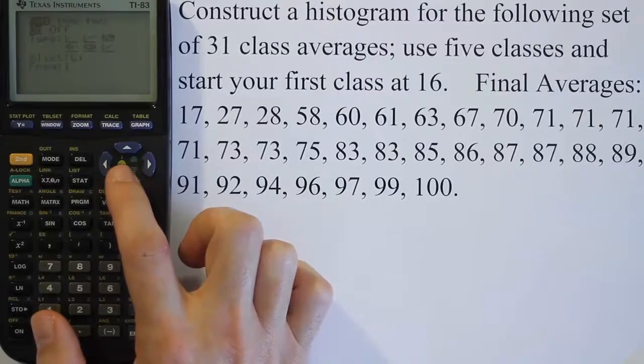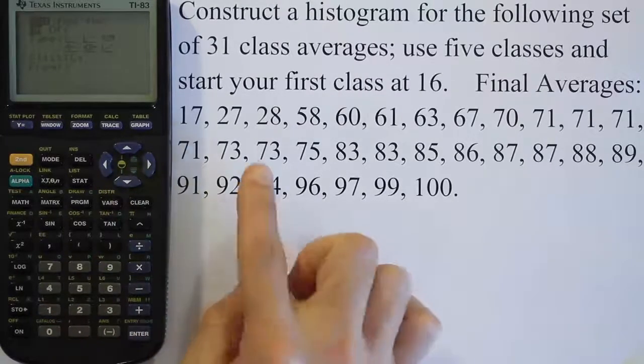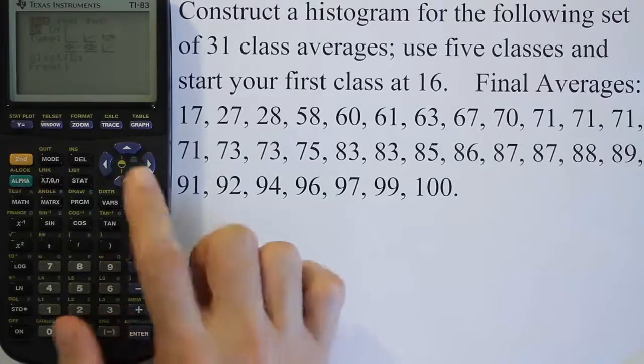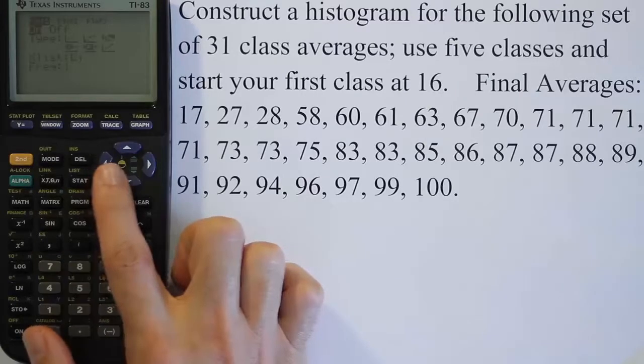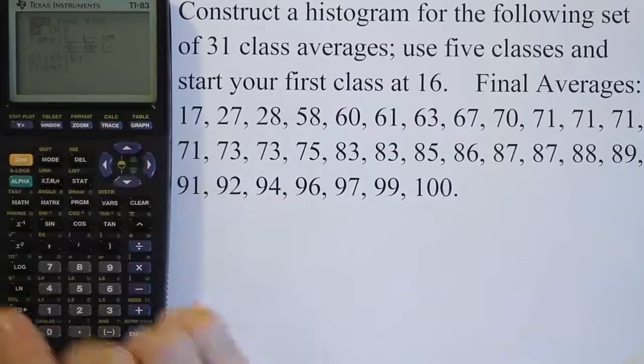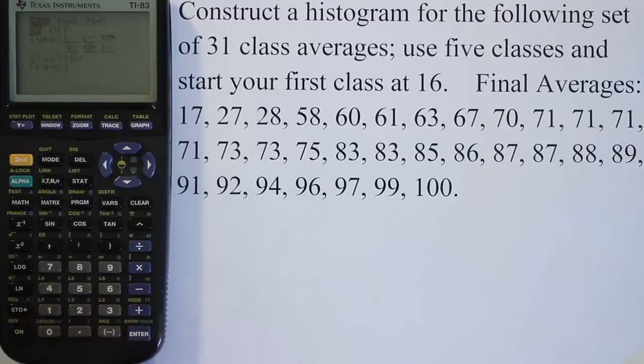Now I'll scroll down to where it says x list. The x list means where did we enter all those data values into the calculator. Do we put it in list one, list two, list three, etc. So it says list one. If it didn't say list one, let's say it says list two, you're going to print second and hit the number of the list that you entered the data in. So let's say if I had the data in list two, I would second in the number two, and then my data would be in list two.